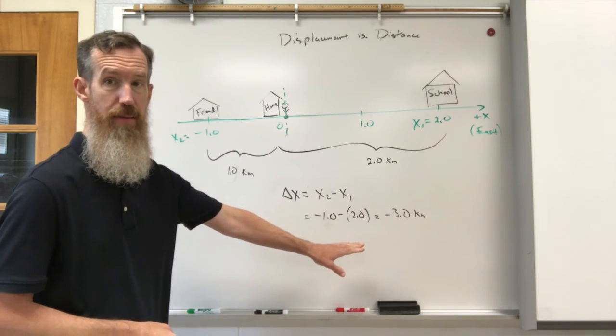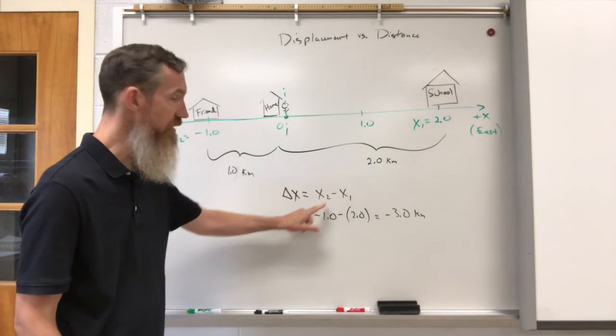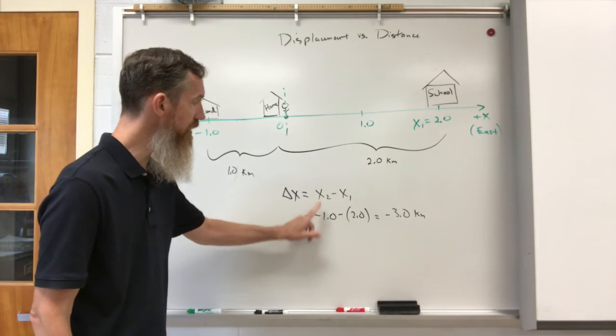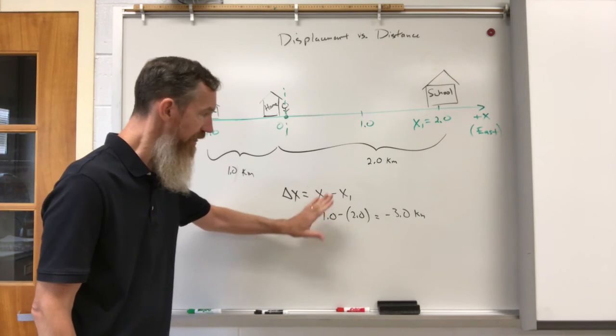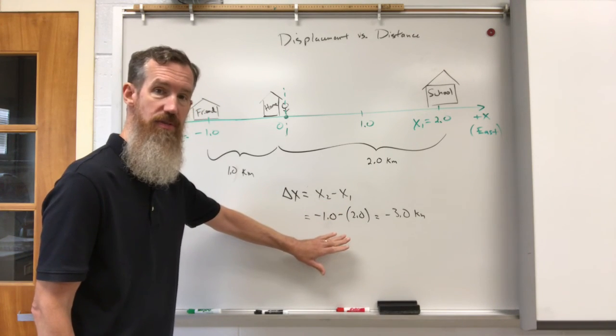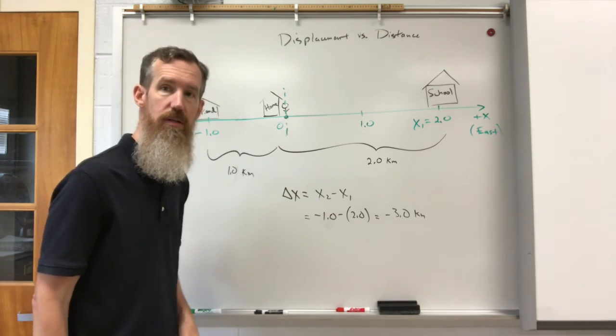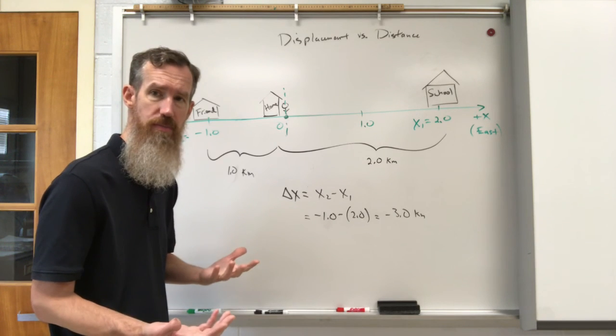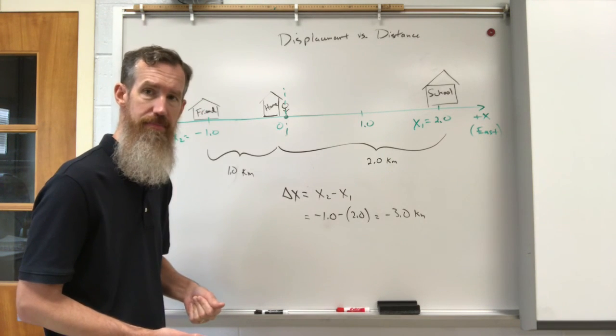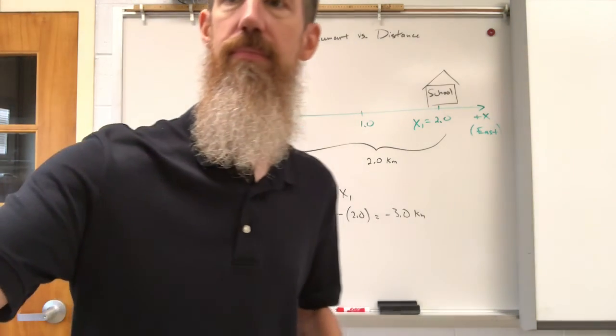Minus three kilometers, or three kilometers to the west. So when you do this, you're going to have to be careful of your signs when you put in your x2 and your x1 values, because that's going to make the difference in terms of telling the reader what direction is the motion. Okay, thanks.